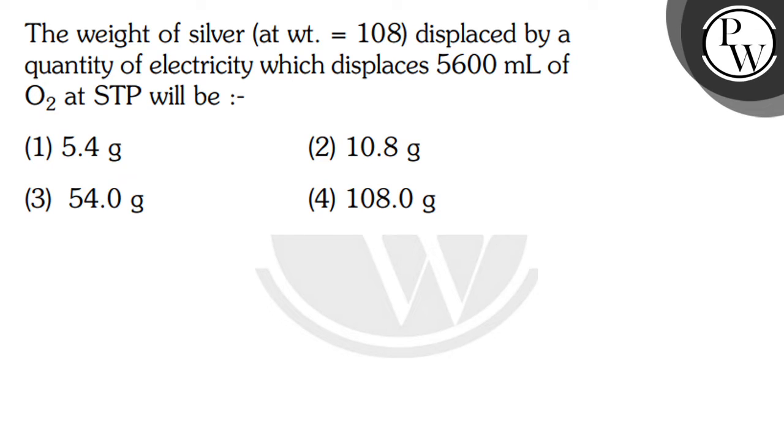Hello Bacho, let's read this question. The weight of silver, atomic weight equals 108, displaced by a quantity of electricity which displaces 5600 mL of O2 at STP will be: 5.4 grams, 10.8 grams, 54 grams, or 108 grams.